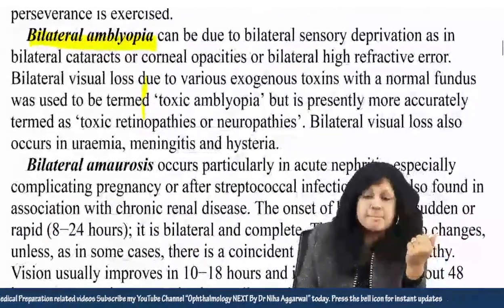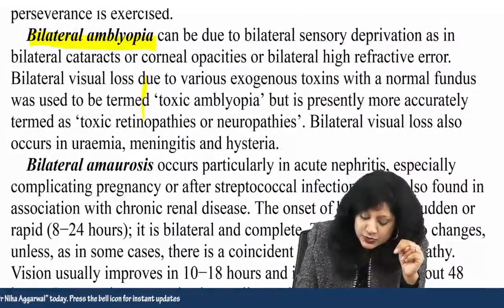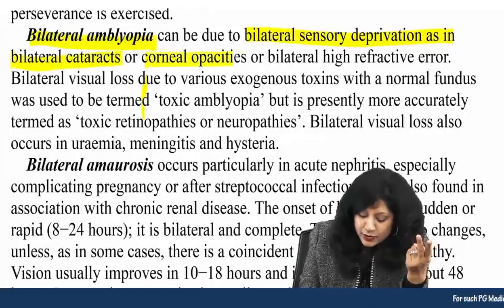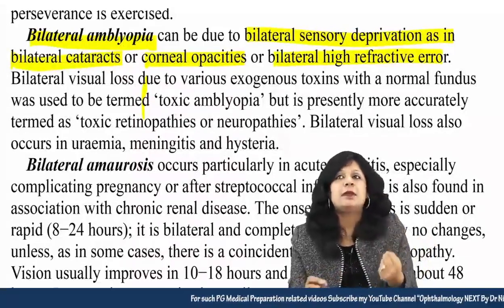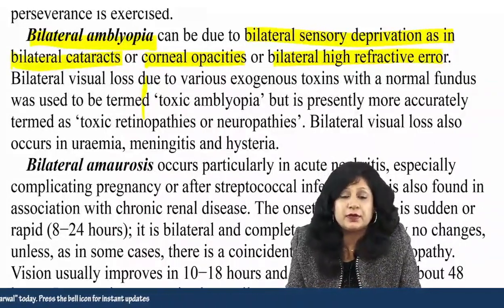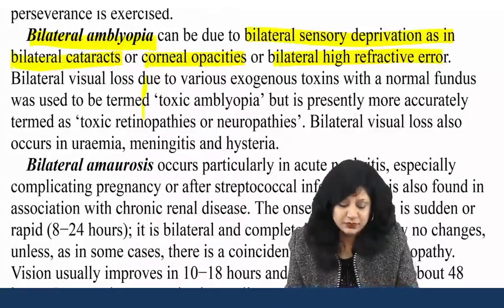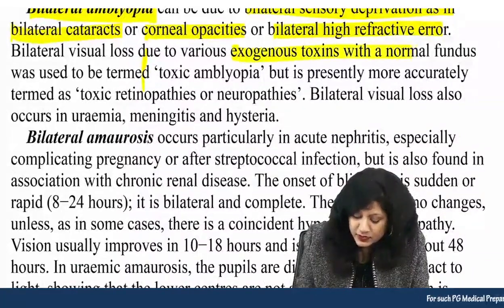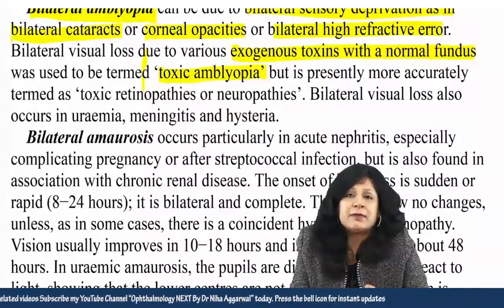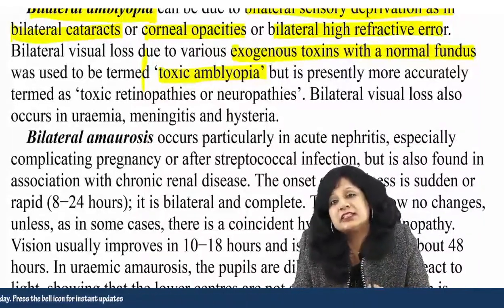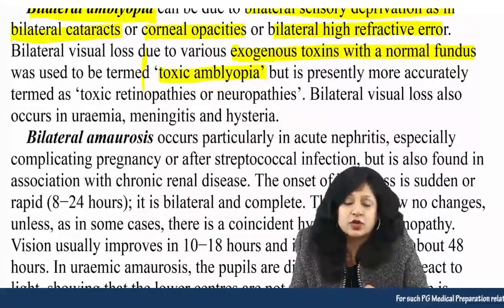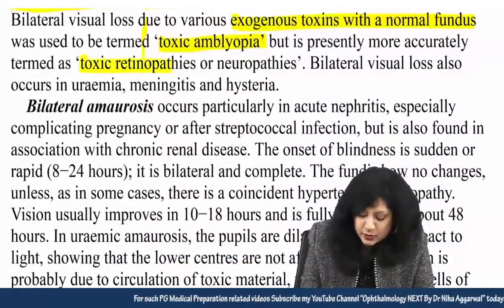On the other hand, bilateral amblyopia is due to bilateral sensory deprivation — if there is bilateral cataract, bilateral corneal opacity, or bilateral high refractive error. Bilateral visual loss due to exogenous toxins with a normal fundus is called toxic amblyopia, which is presently more accurately termed toxic neuropathies or toxic retinopathies.